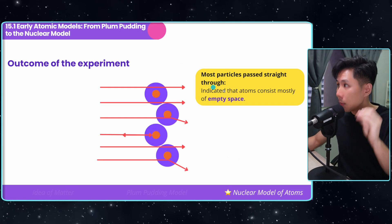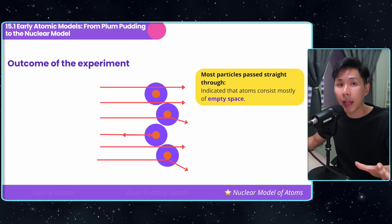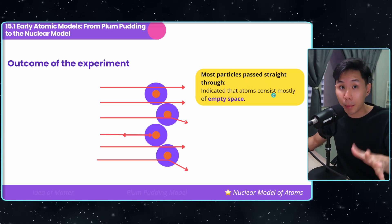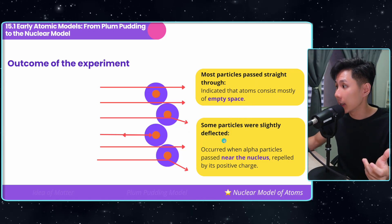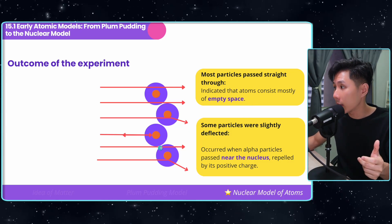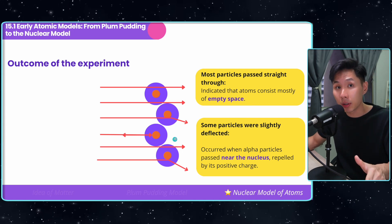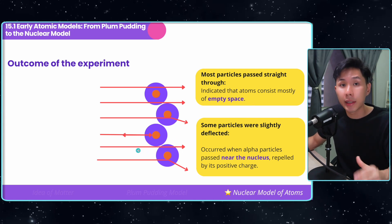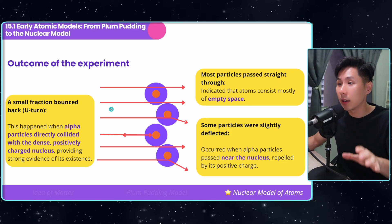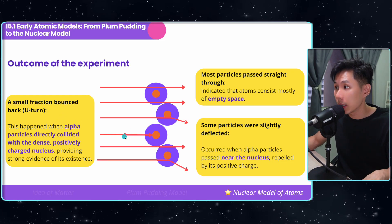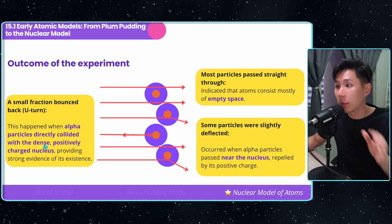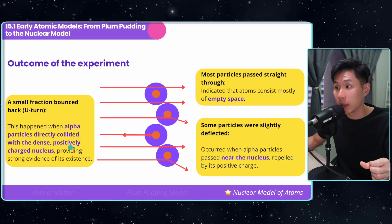This is the outcome of the experiment. Most particles pass straight through, indicating that atoms mostly consist of empty space. Some particles were deflected, but only slightly, which occurred when the alpha particles pass near the nucleus. They are deflected because they are repelled. And a tiny small fraction of alpha particles literally take a U-turn. This happened when alpha particles directly collided with the dense, positively charged nucleus.